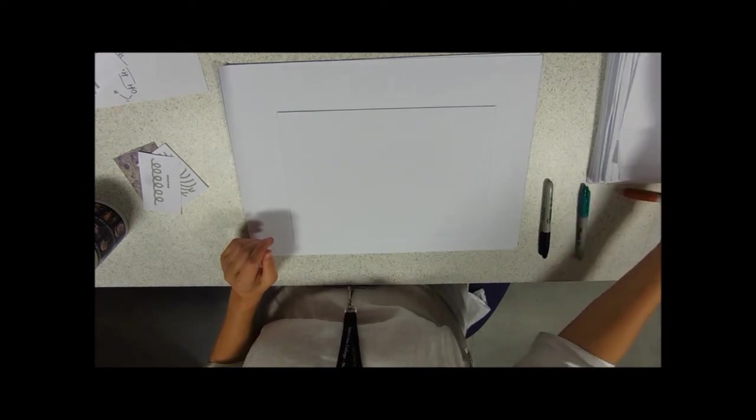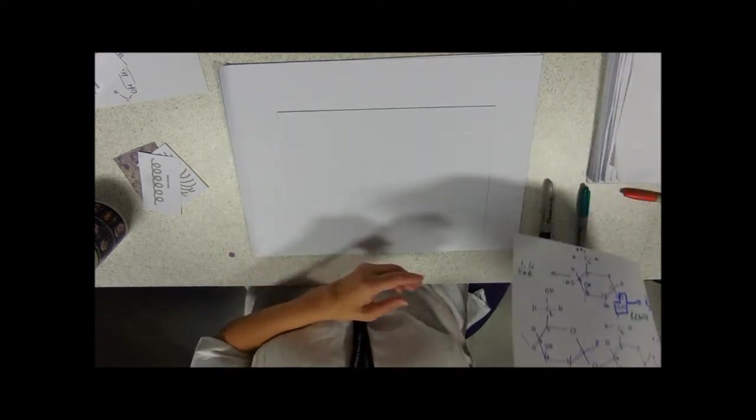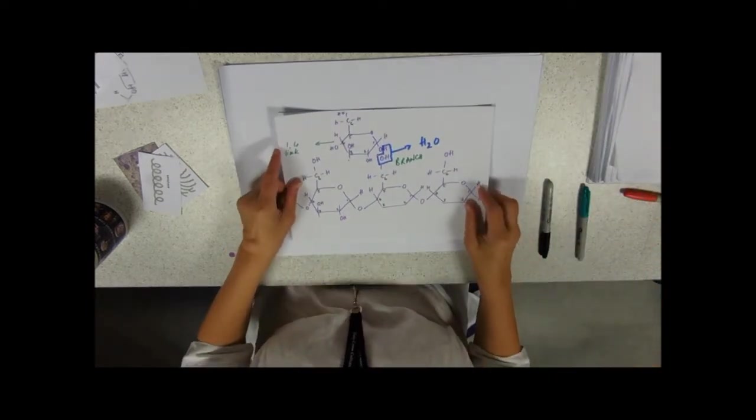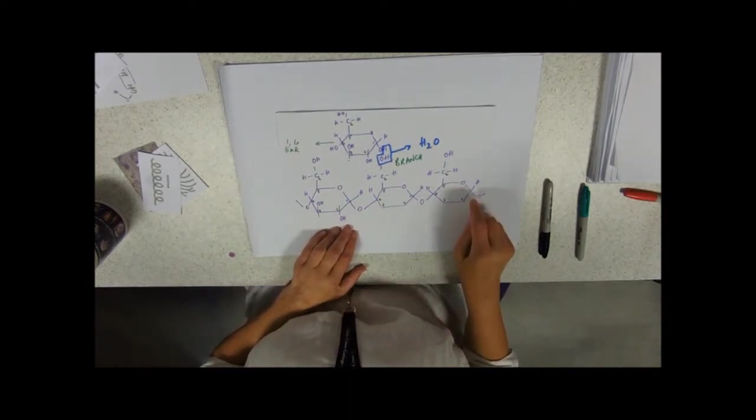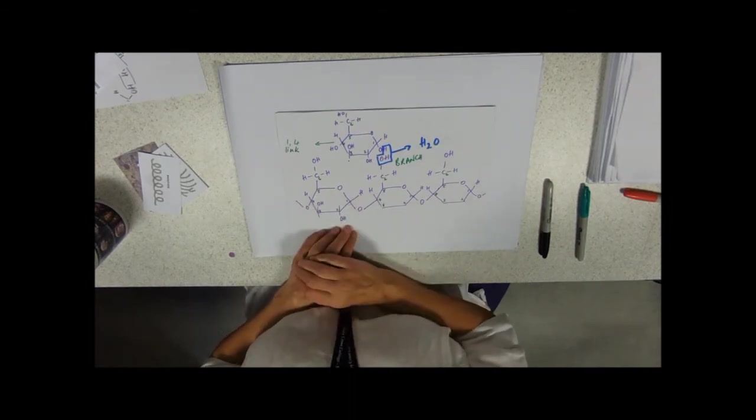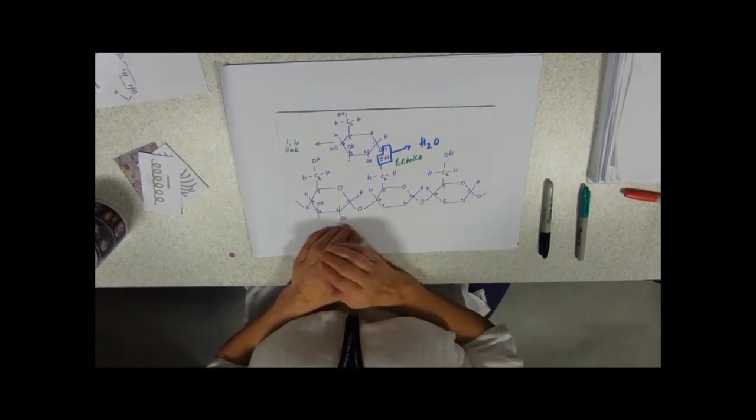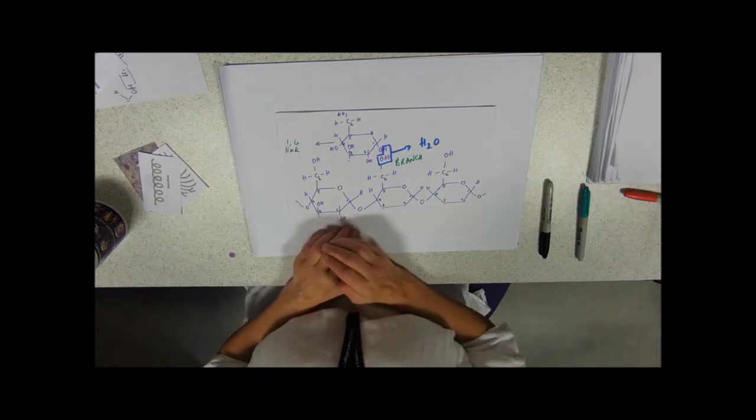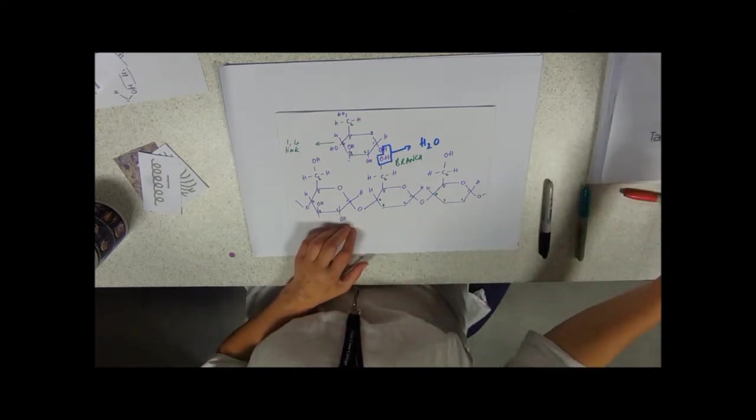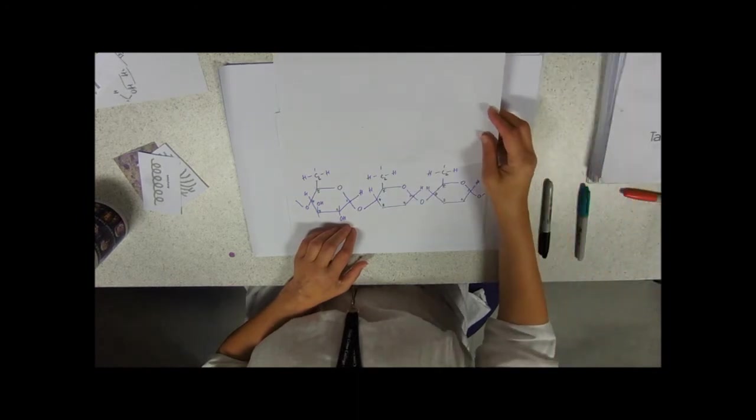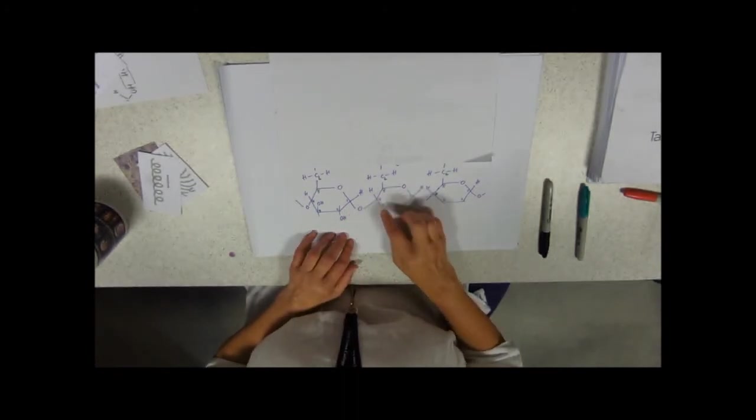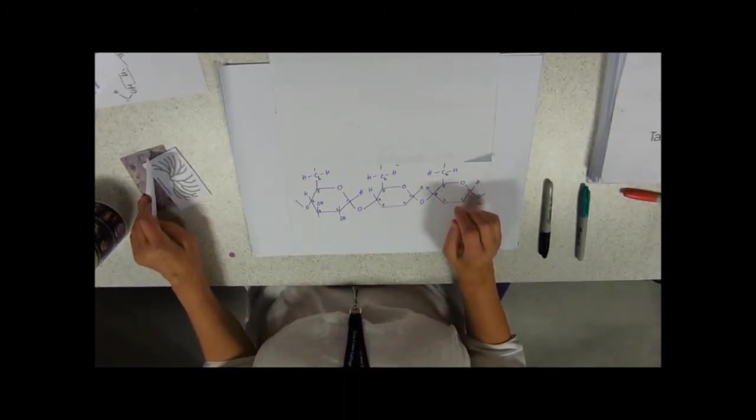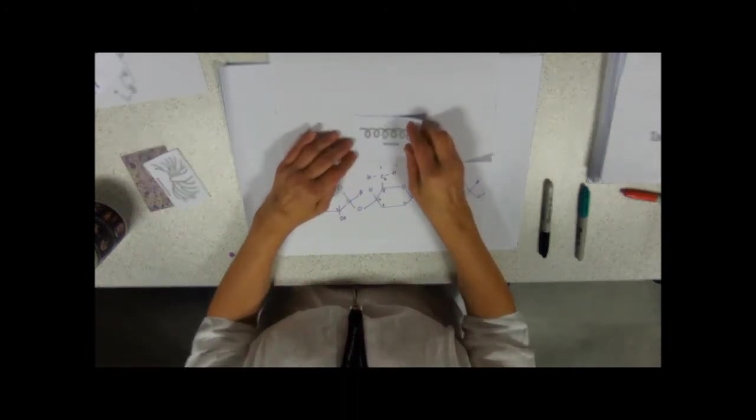Starch is formed from alpha glucose units, big long line of them joined all together. So the monomer is alpha glucose. That's really important, you do need to know that it's alpha glucose. If we join lots and lots of alpha glucoses together, because of the bond angles, what we form is a lovely spiral molecule.